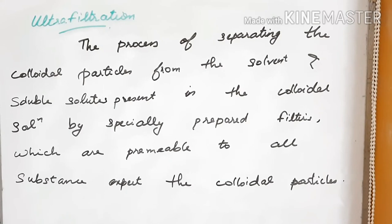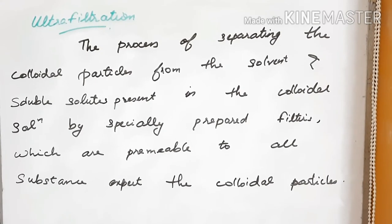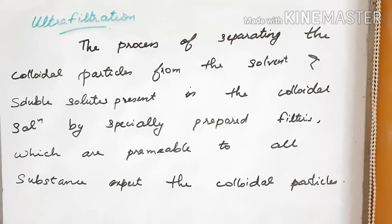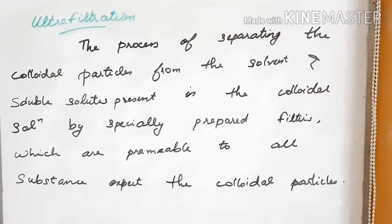In this part, we are covering the purification of colloidal solutions. The last method is ultrafiltration. Ultrafiltration is the process of separating the colloidal particles from the solvent and soluble solutes present in the colloidal solution by specially prepared filters, which are permeable to all substances except the colloidal particles.